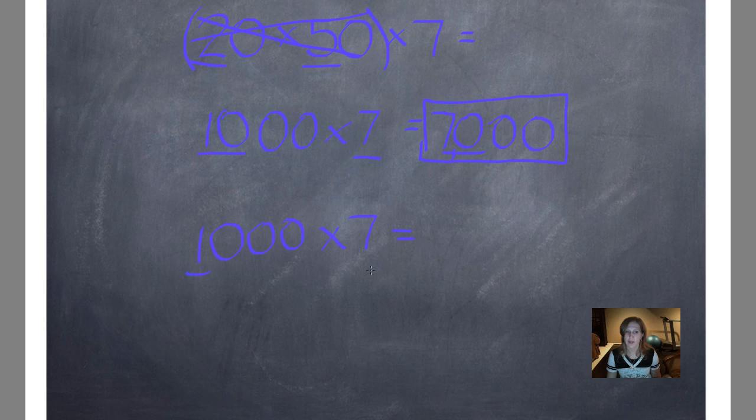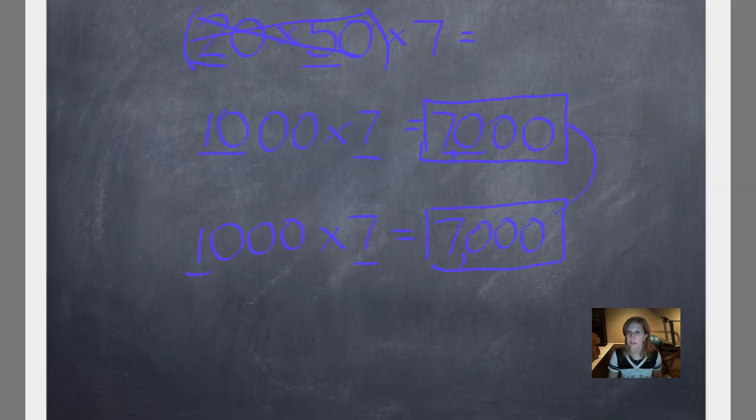This time, I'll just underline the 1 and the 7. 1 times 7 is 7. Now I count my zeros that are left. 1, 2, 3. 1, 2, 3. See? My answer is exactly the same. I just used a different strategy to find it. Whichever way you use is absolutely okay. Just check it carefully and underline the correct amount of digits each time.